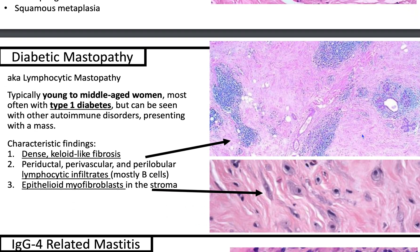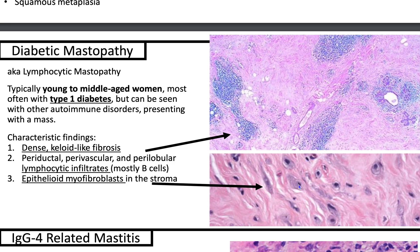One of my favorite breast entities is called diabetic mastopathy or lymphocytic mastopathy. It's typically seen in young to middle-aged women, most often with type 1 diabetes, but can be seen in other autoimmune disorders, and it can present with a mass. The three characteristic findings are: a keloid-like, very dense fibrosis in the stroma; periductal, perivascular, and perilobular lymphocytic infiltrates; and epithelioid myofibroblasts in the stroma — where epithelioid means nuclei with abundant cytoplasm, usually centered or near-centered.